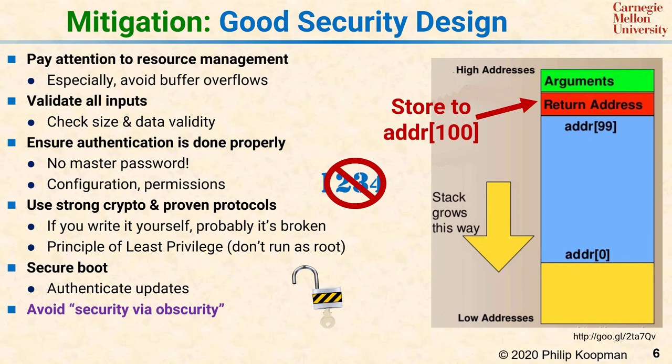As a concrete example, a proprietary embedded network protocol in which you do not publish the message dictionary is inherently not secure. Even if you think it's obscure, someone will figure it out. History shows it's just not that hard. If someone wants to spend the time — even if the motivation is simply bragging rights — they will figure out how to attack your system if your security argument is simply keeping the details a secret.